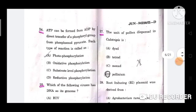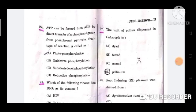Question number 27: The unit of pollen dispersal in Calotropis is? Option number D, pollinium.